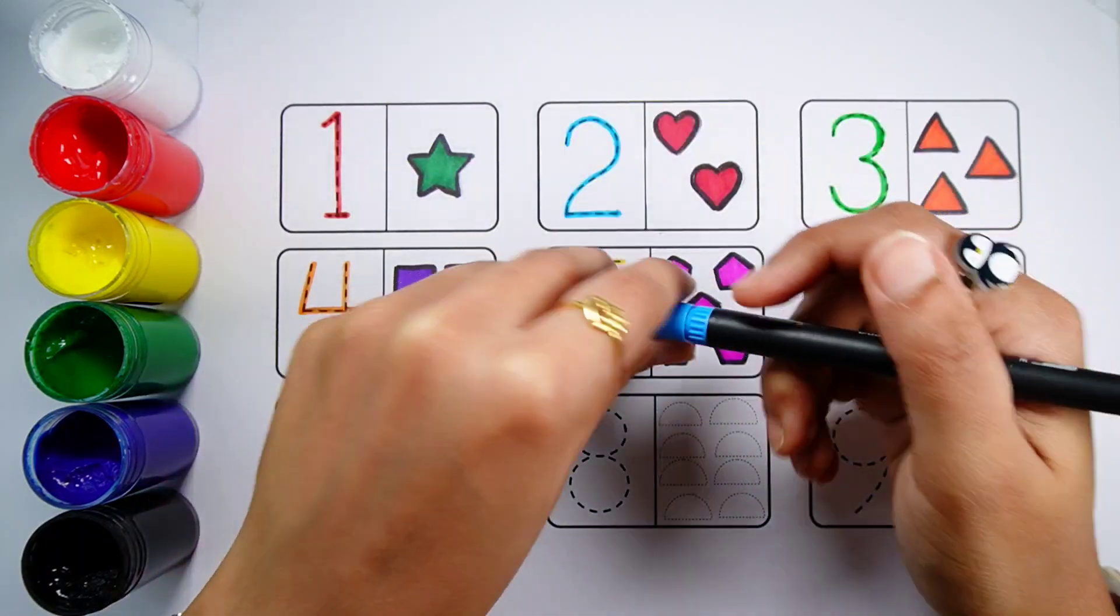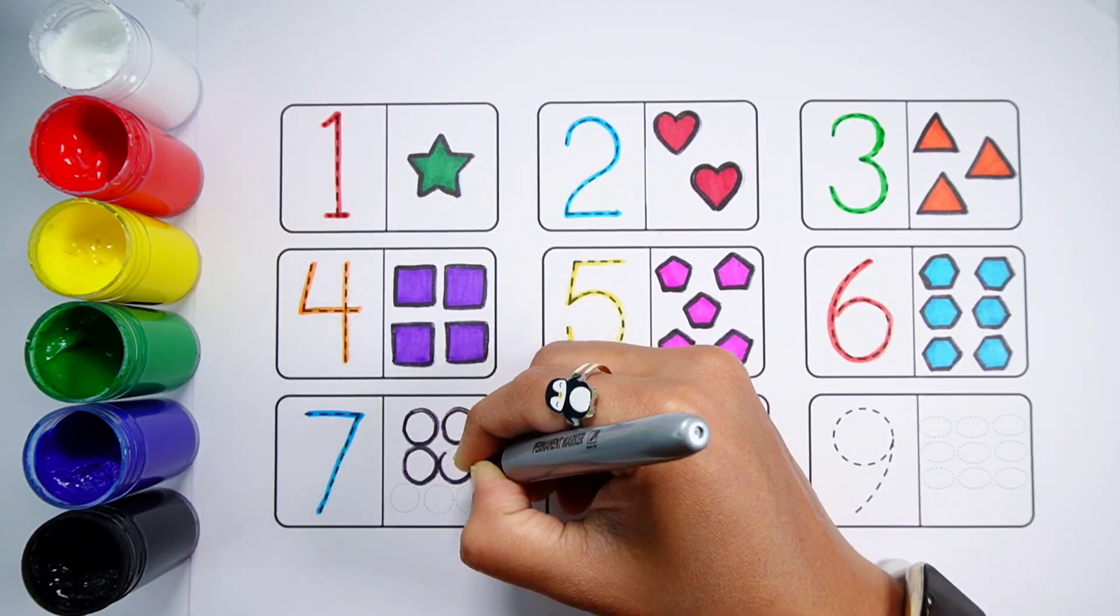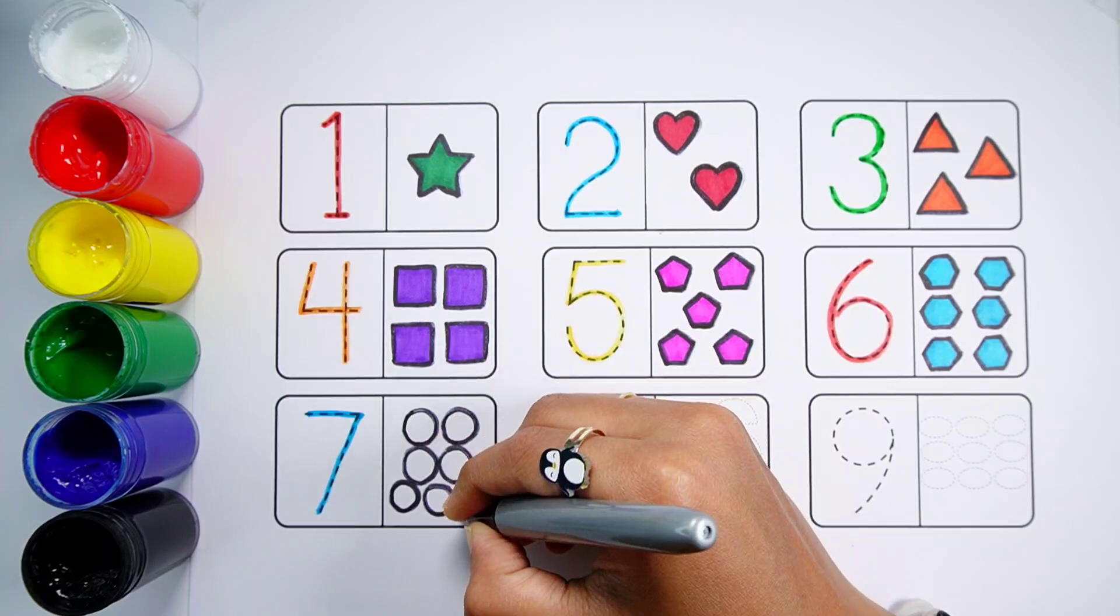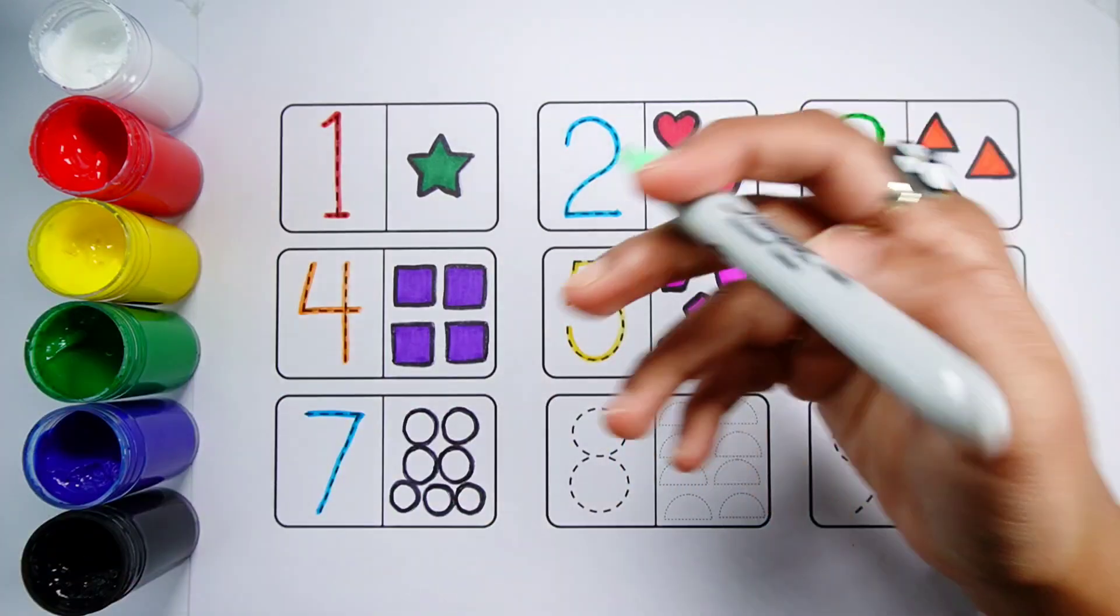Number 7. One, two, three, four, five, six, seven. Seven circles. Pale green color.